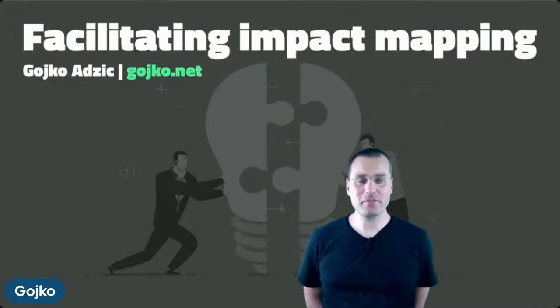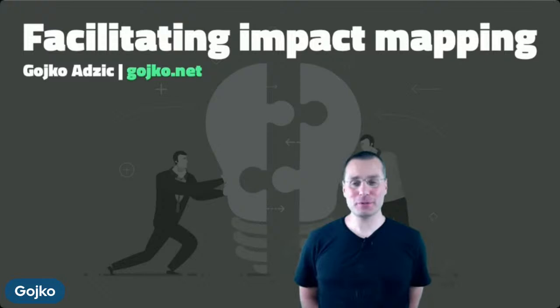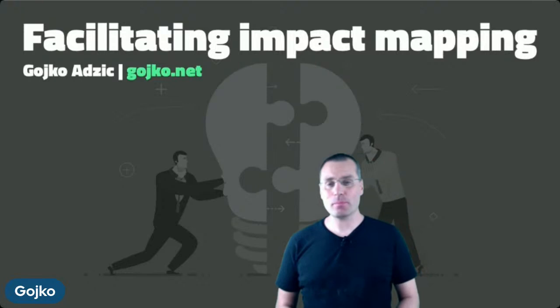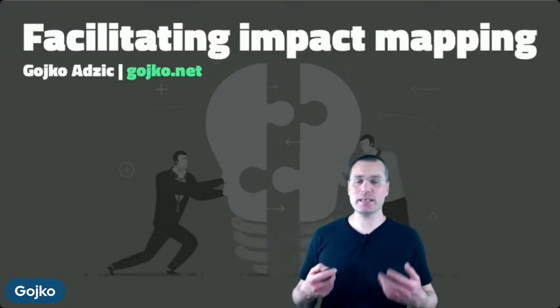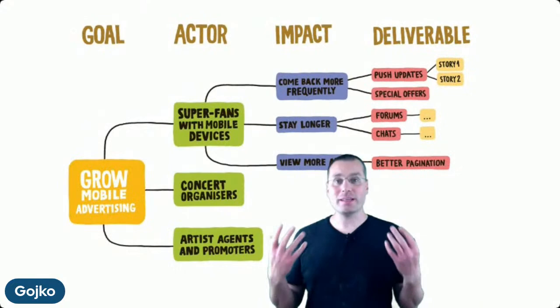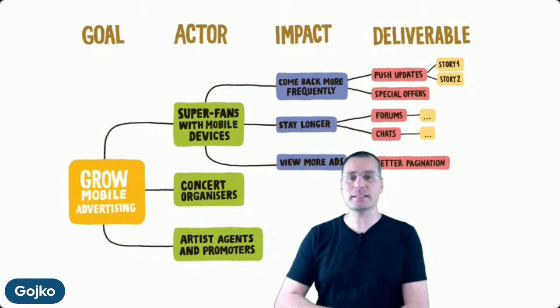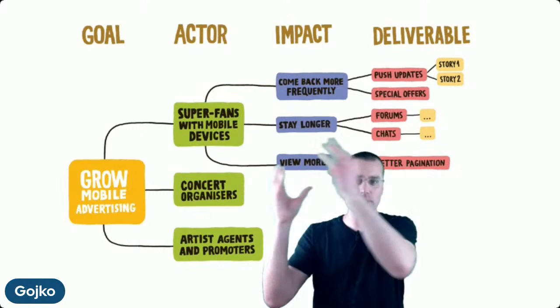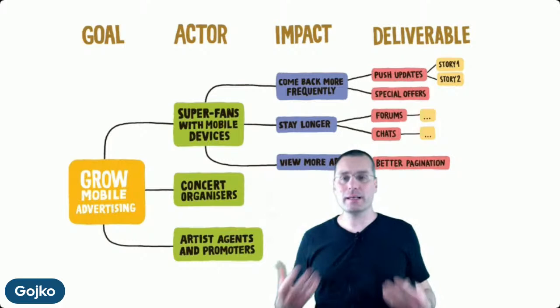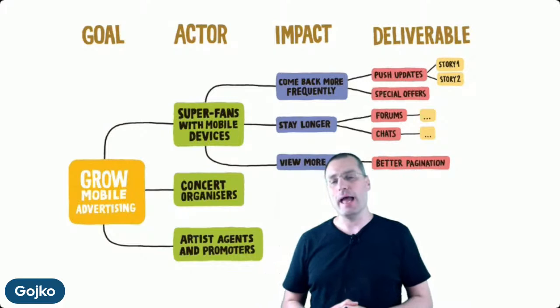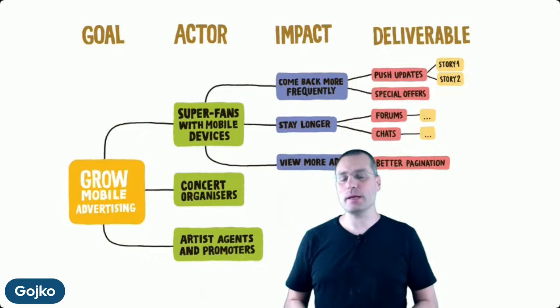Thank you very much and welcome everybody. I can see a few of my friends have joined according to the chat. Today I'm going to talk a bit about facilitating impact mapping. Impact mapping is a collaborative planning technique that helps organizations get quick alignment on what they want to build, where the value is, and how to track delivery. Impact maps usually look like mind maps that take us from deliverables all the way to business goals.